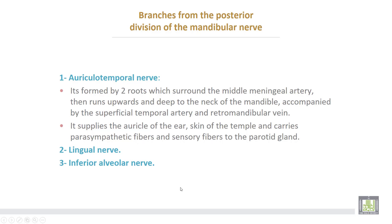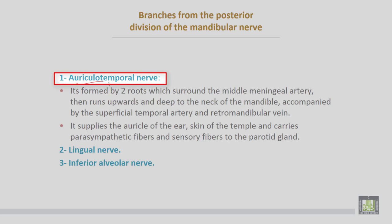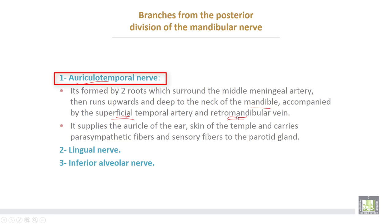Branches from the posterior division of the mandibular nerve: number one, the auriculotemporal nerve, which is formed by two roots that surround the middle meningeal artery. It then runs upward, deep to the neck of the mandible, accompanied by the superficial temporal artery and the retromandibular vein. It supplies the auricle of the ear and the skin of the temple, and carries parasympathetic fibers and sensory fibers to the parotid gland.